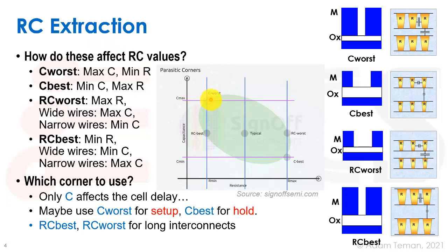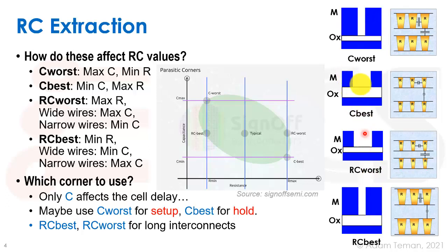Our delay is proportional to the resistance and capacitance of back-end wiring. For a worst-case setup corner, we want maximum RC delay. But there's a trade-off: taking worst-case C assumes metal layers were wider than intended, which increases coupling capacitance but also reduces resistance. So widening wires gives higher C and lower R simultaneously, making it non-trivial to identify which corner is truly worst-case.